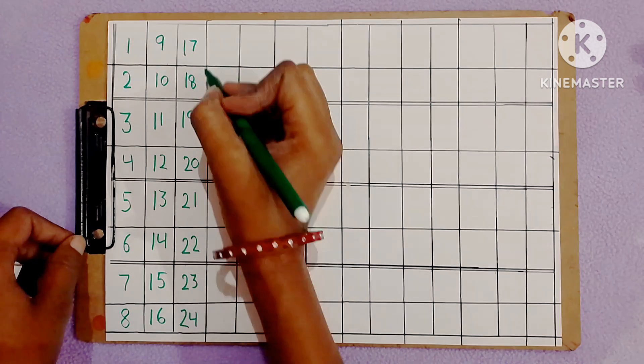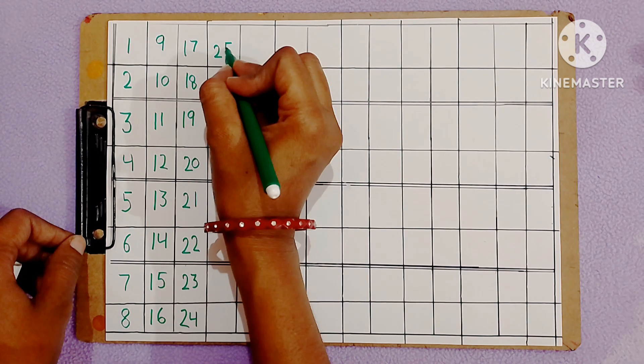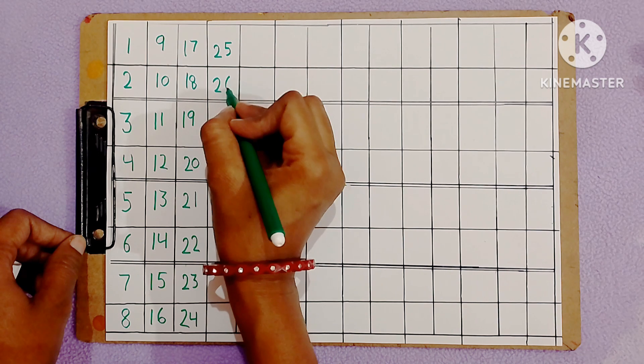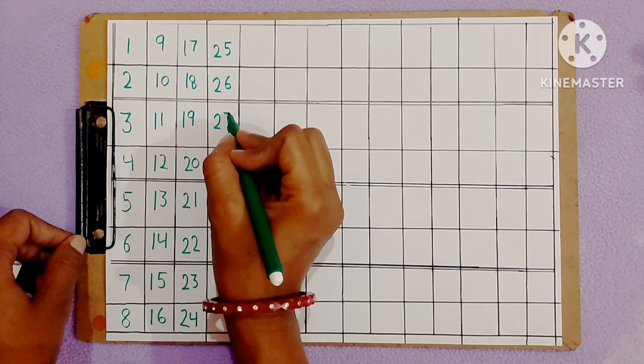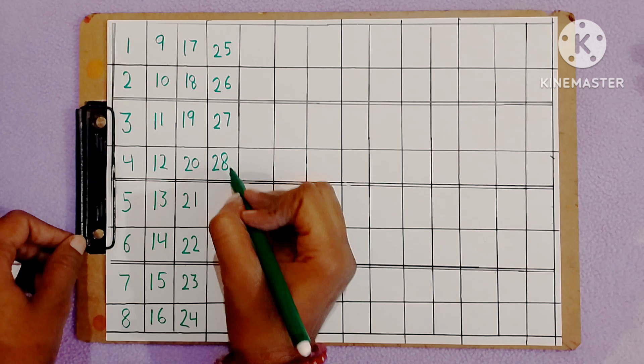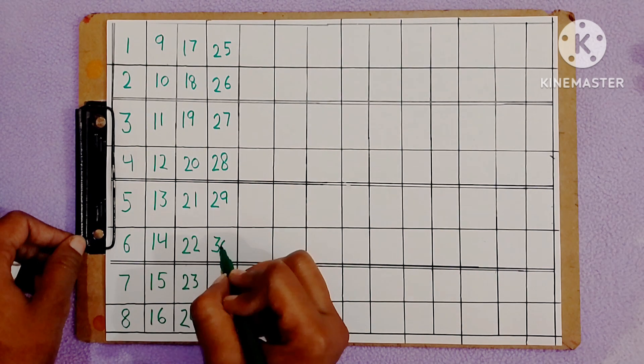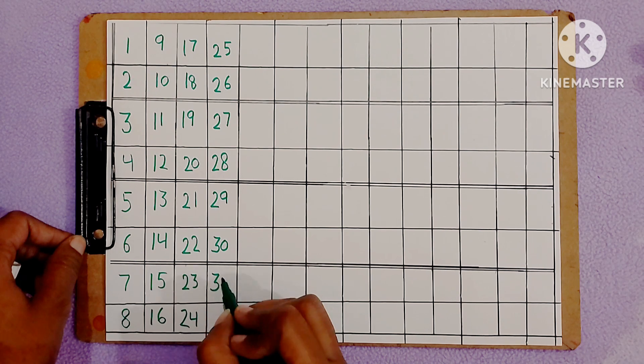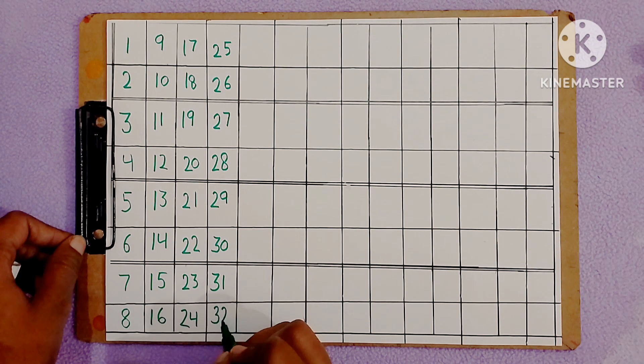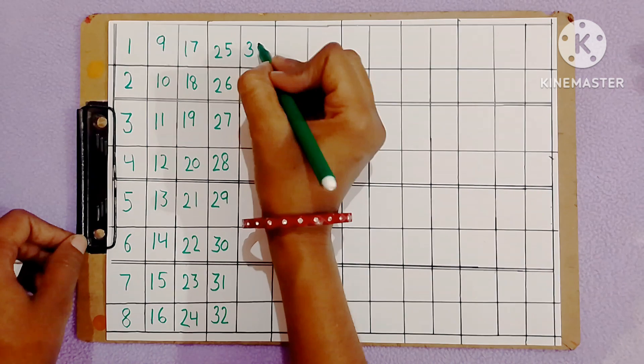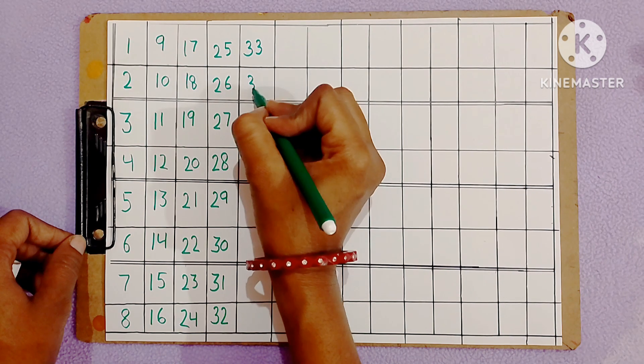Twenty-four, twenty-five, twenty-six, twenty-seven, twenty-eight, twenty-nine, thirty, thirty-one, thirty-two, thirty-three, thirty-four.